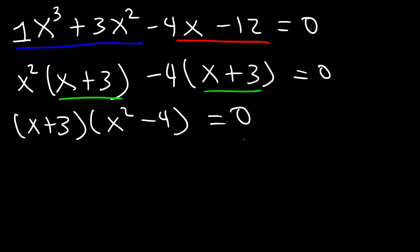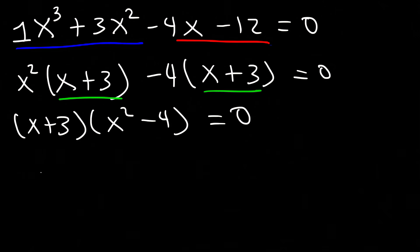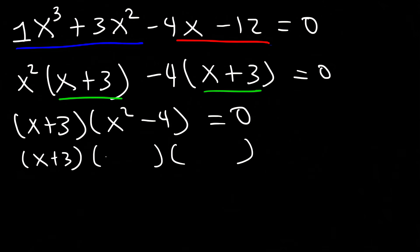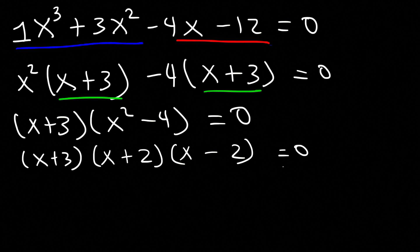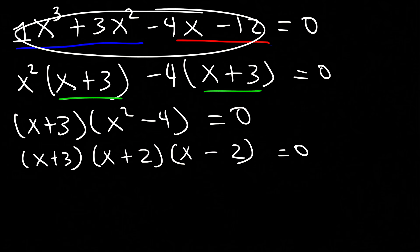Now we're not done yet. We can still factor x squared minus 4 — it's a difference of perfect squares. The square root of x squared is x, and the square root of 4 is 2. One factor is going to be positive and the other will be negative. So now the polynomial expression has been completely factored.